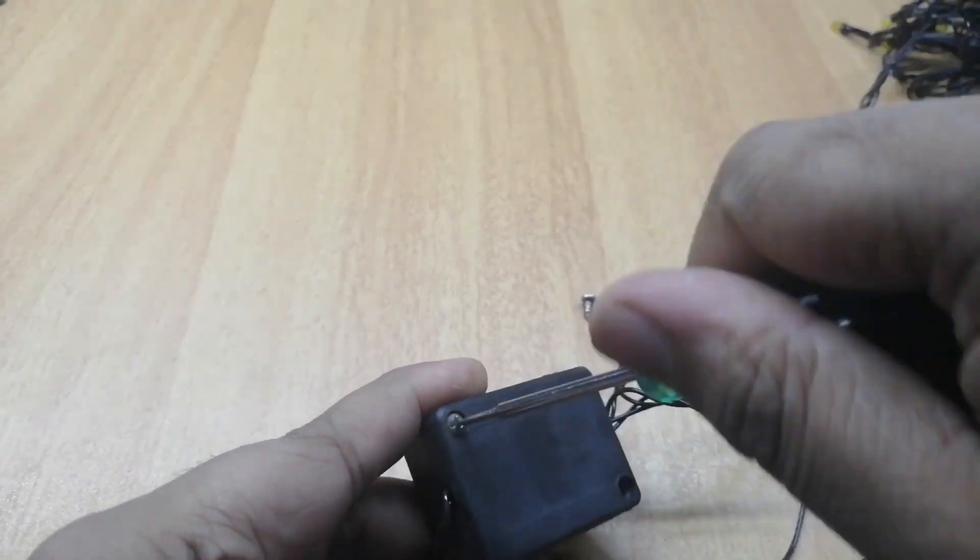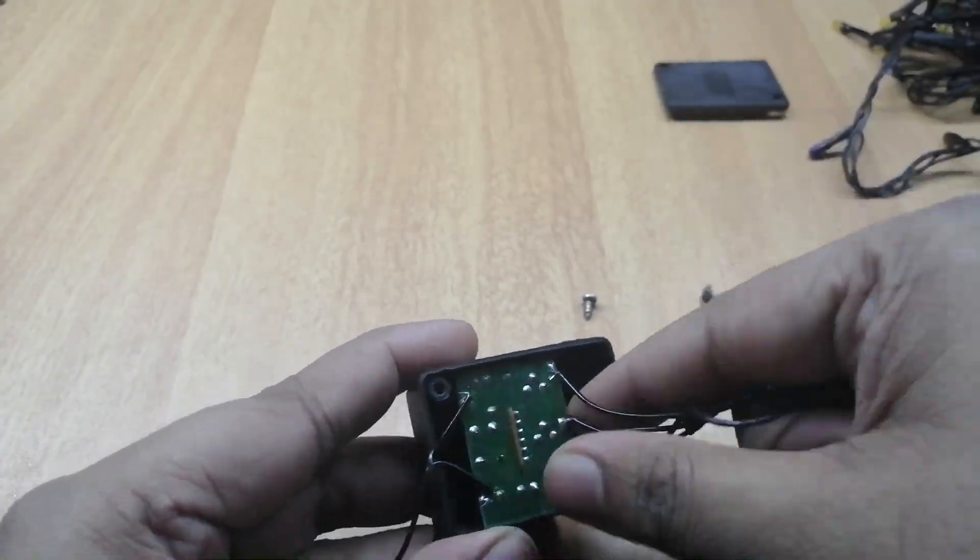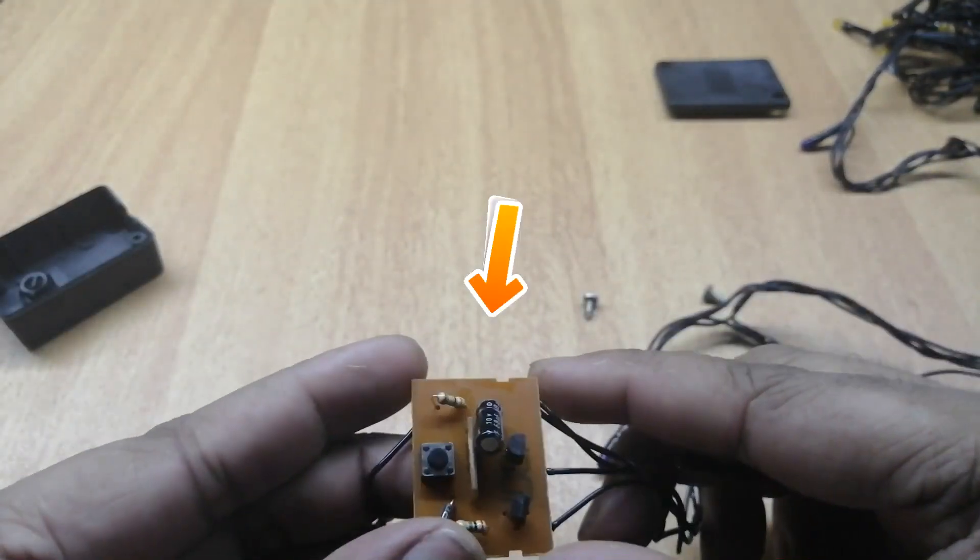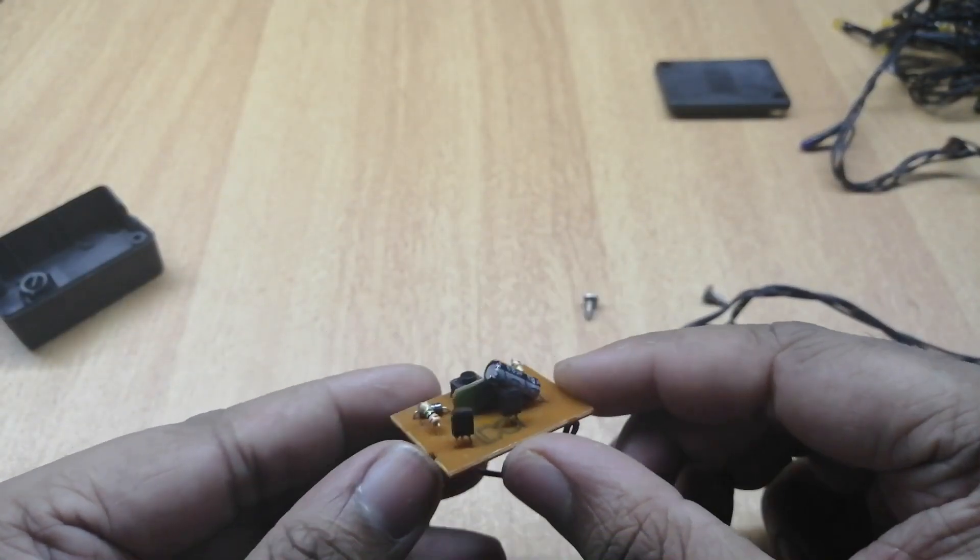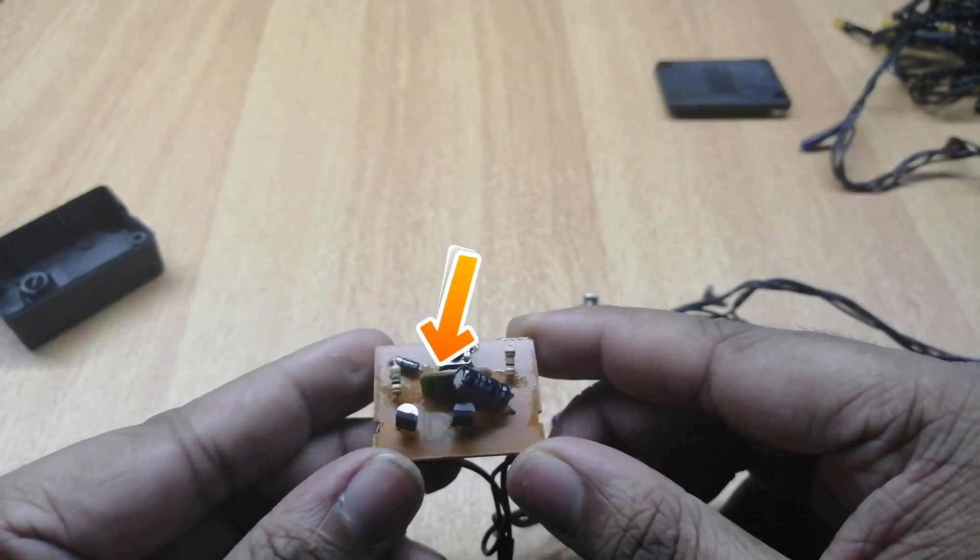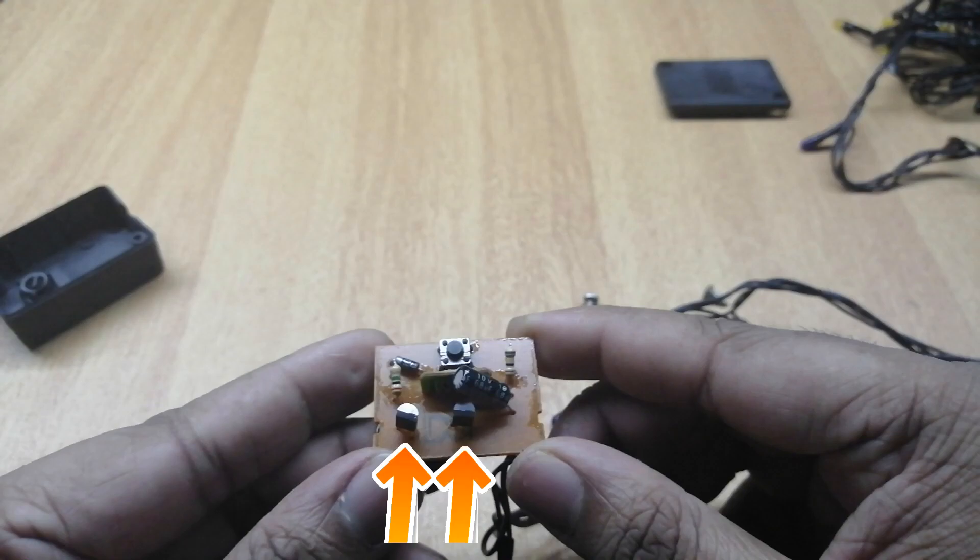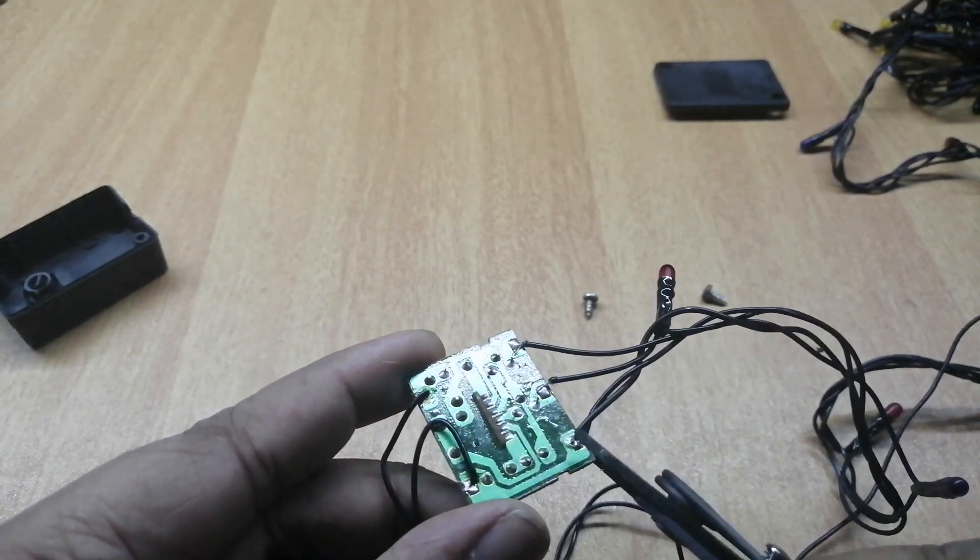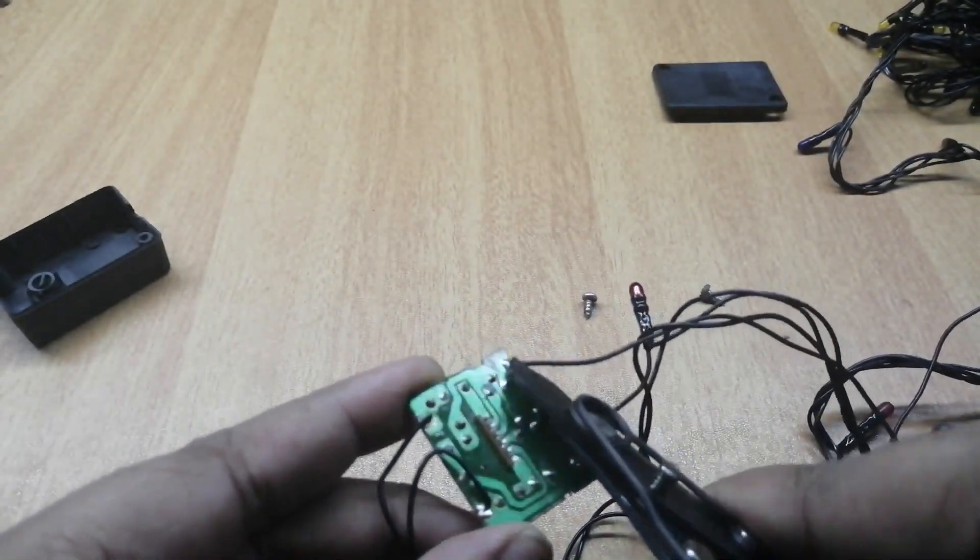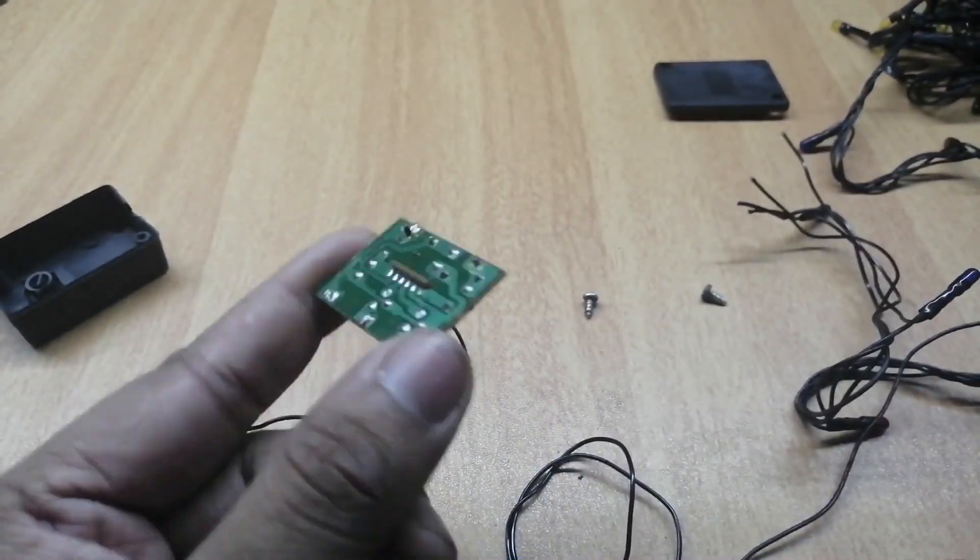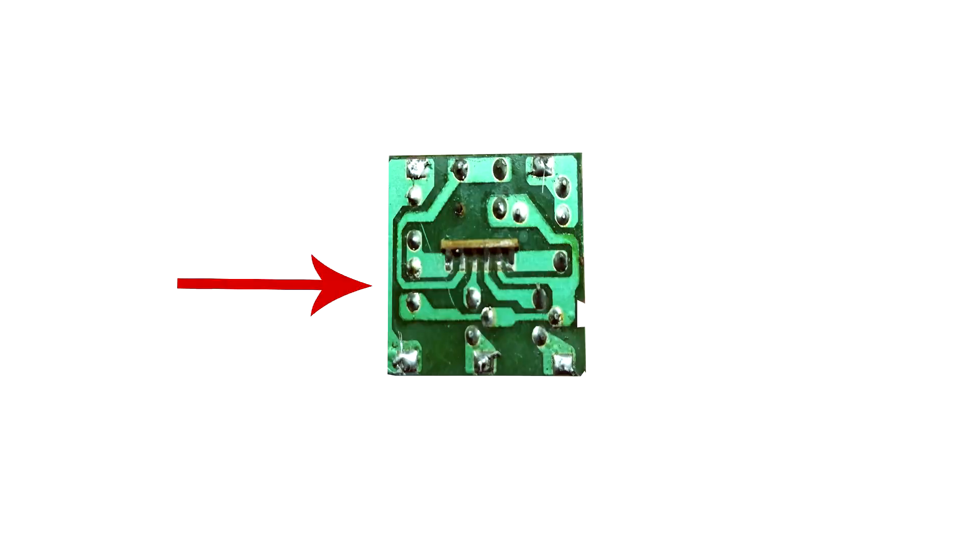This is the controller circuit with the controlling chip, output transistors, and mode switch. Remove all the wires. This is the sequencer control board.